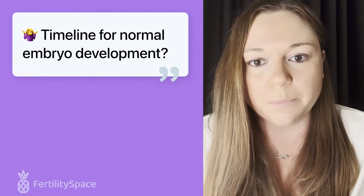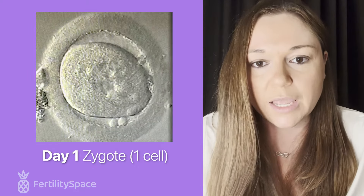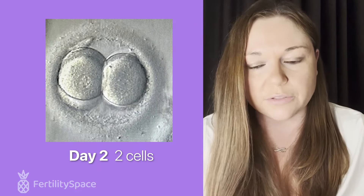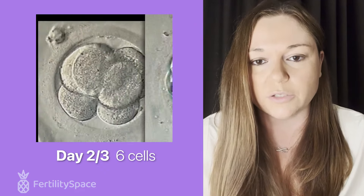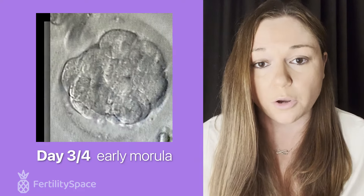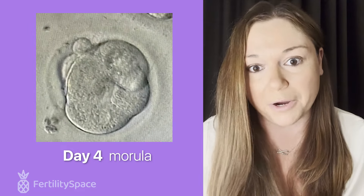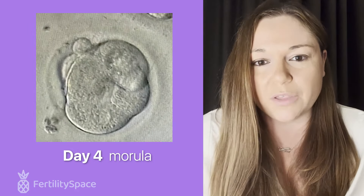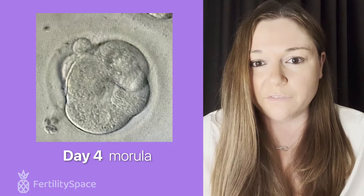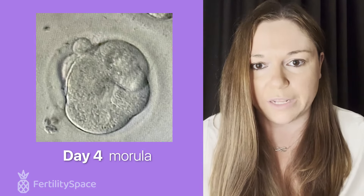What is normal embryo development? Every embryo starts from one cell — an egg that has been fertilized. That one cell divides into two cells, those two cells divide into four cells, then eight cells, and so on. Eventually, the cells start to clump together and form something called a morula — Latin for mulberry because it looks like a ball of mulberries. A morula is something you'd expect to see on day four, and then it starts to form a little cavity called a blastocele.